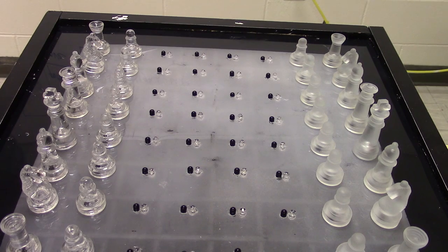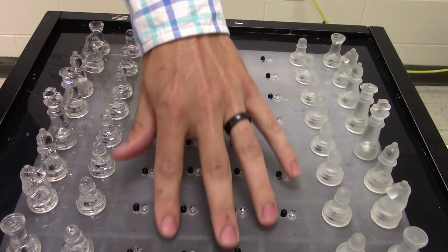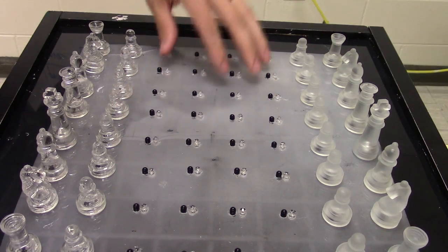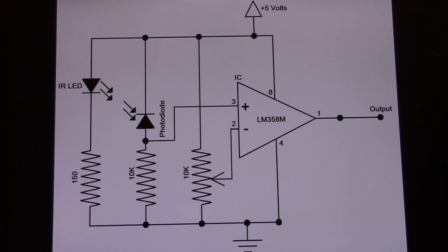How we were able to determine whether a piece is on a square or not is we designed an infrared circuit where there's an infrared sensor on each of these squares. This is the circuit design that we use for our sensors that are on the chess board. We have one of these circuits for each individual square.